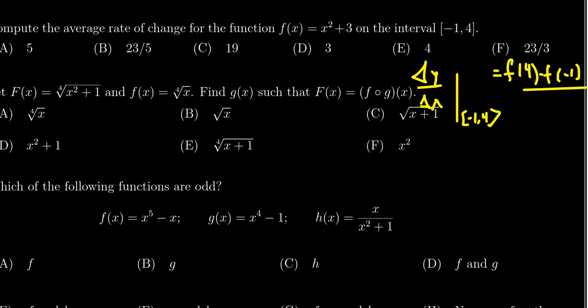divided by 4 minus (-1). Notice on the bottom you have a negative negative, so that becomes a positive number. You end up with 4 + 1 in the denominator.